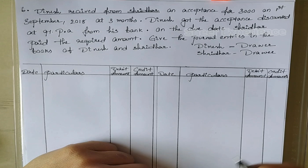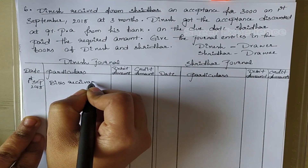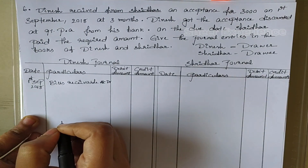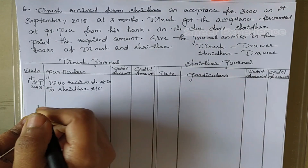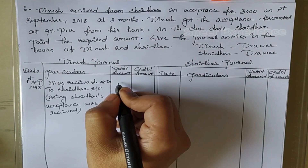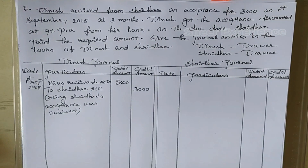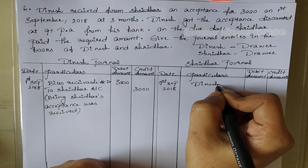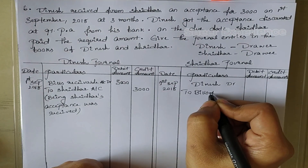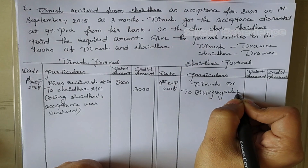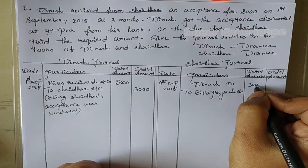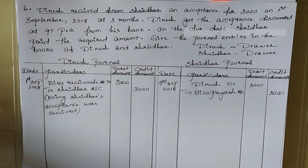We don't have to write the journal entry for credit sales. Journal entry in Dinesh's books is: Bills Receivable Account debit to Shridhar. Amount is 3000. Journal entry in Shridhar's books is: Dinesh debit to Bills Payable Account. Amount is 3000.